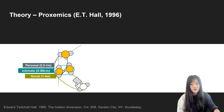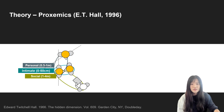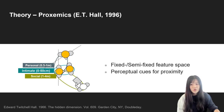Hence, we look at proximity theory to describe how social relationships can be affected by users' spatial organization, such as forming different interpersonal distances. We draw two notions from proximity theory to design new mechanisms for turn-taking in multi-party remote meetings.